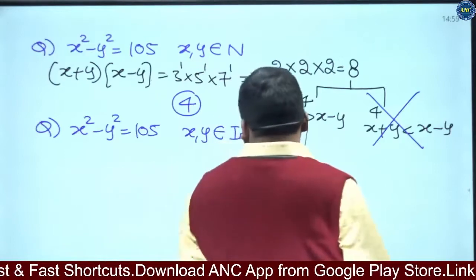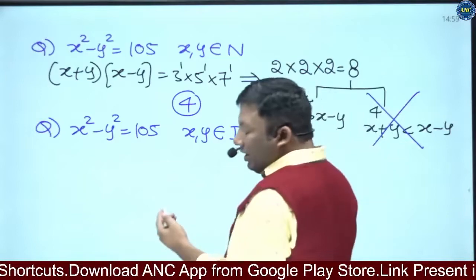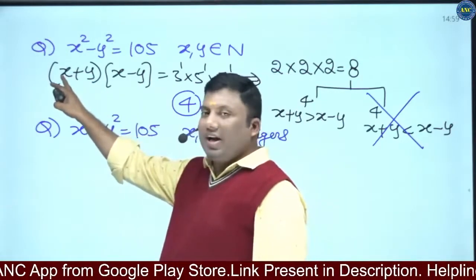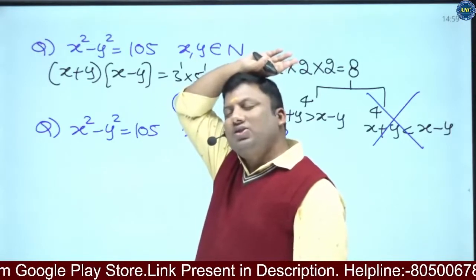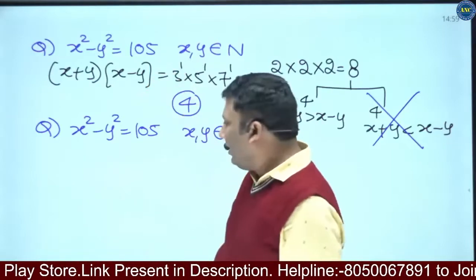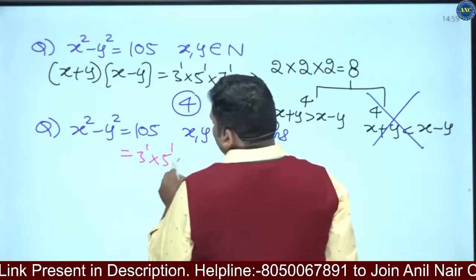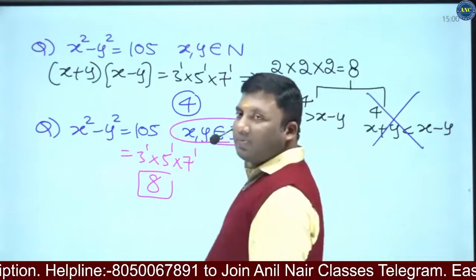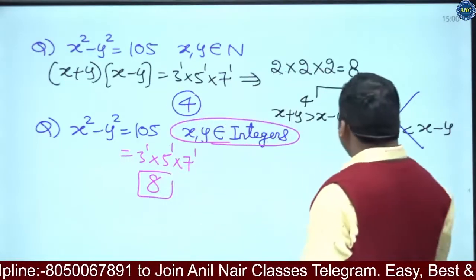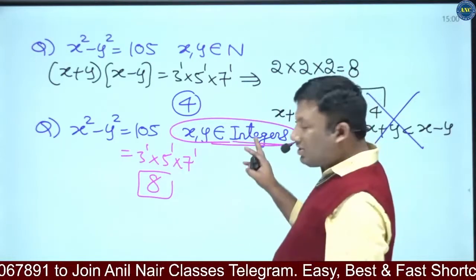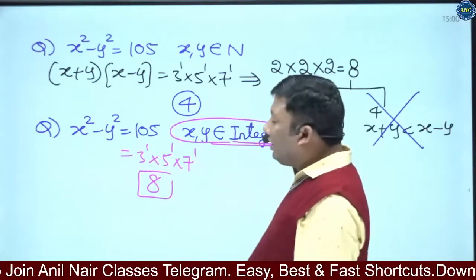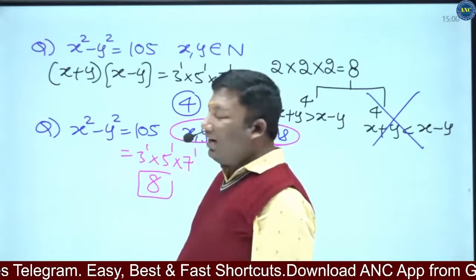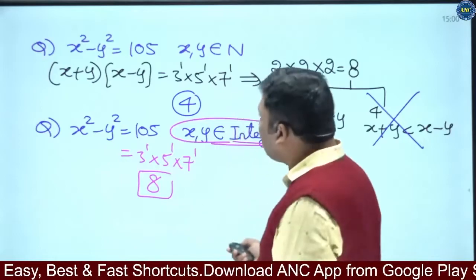For integers, one can be negative and another positive, so the condition that sum must be greater than difference is not satisfied. For example, 3 and -2: sum is 1, difference is 5, so 1 is less than 5. Therefore for integers all 8 cases are valid — we do not eliminate the 4 reverse cases. Also note: the digital sum of 105 is 6, and the digital sum of a perfect square is always 1, 4, 7, or 9.